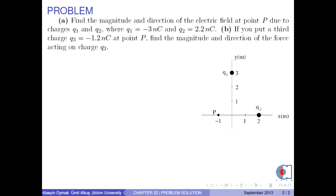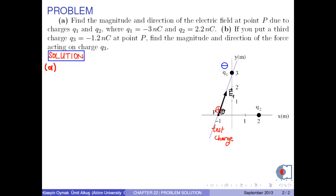Part A: Find the magnitude and direction of the electric field at point P due to charges q1 and q2, where q1 is negative 3 nanocoulombs and q2 is 2.2 nanocoulombs. Since q1 is a negative charge and we think there is a positive test charge at point P, the electric field at point P due to charge q1 is drawn from point P to q1.